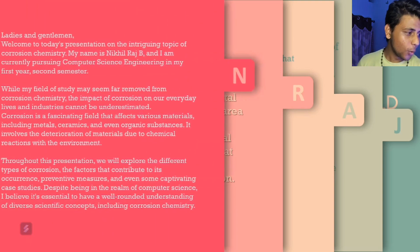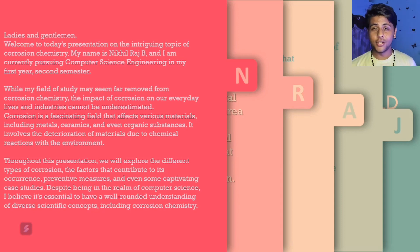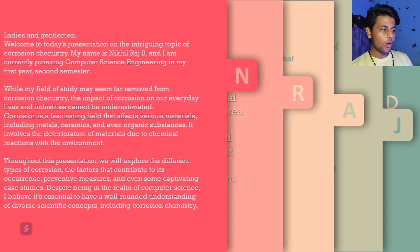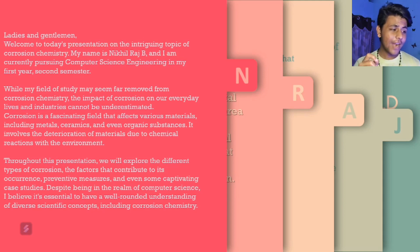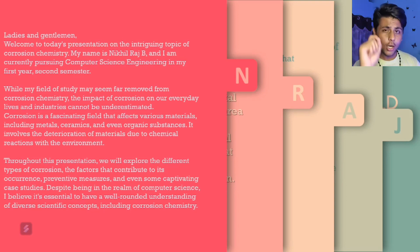Ladies and gentlemen, welcome to today's presentation on the intriguing topic of corrosion chemistry. My name is Nikhil Raj and I am currently pursuing computer science engineering in my first year, second semester. While my field of study may seem far removed from corrosion chemistry, the impact of corrosion on our everyday lives and industries cannot be underestimated. Corrosion is a fascinating field that affects various materials including metals, ceramics, and even organic substances. Throughout this presentation we will explore the different types of corrosion, the factors that contribute to its occurrence, preventive measures, and some captivating case studies.